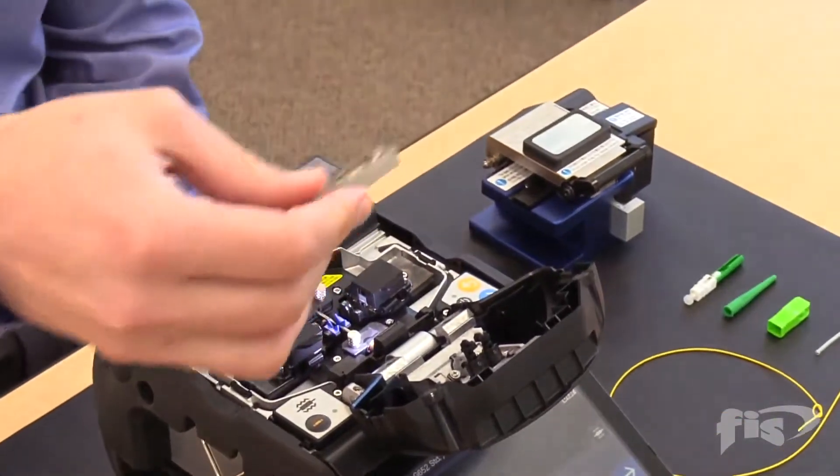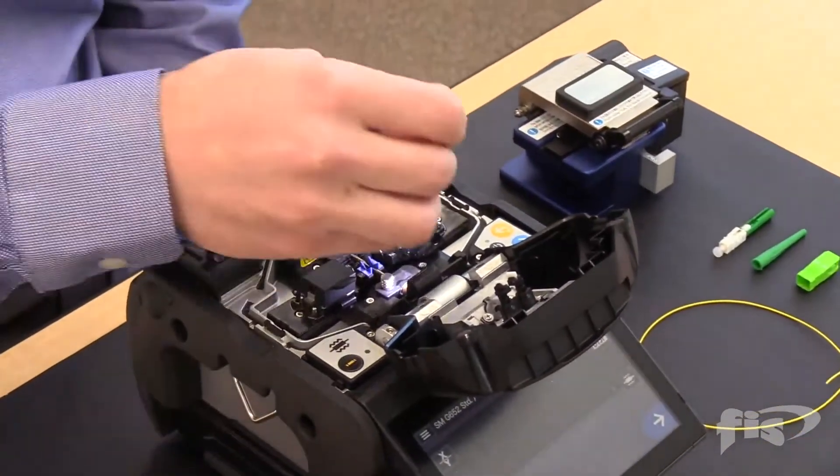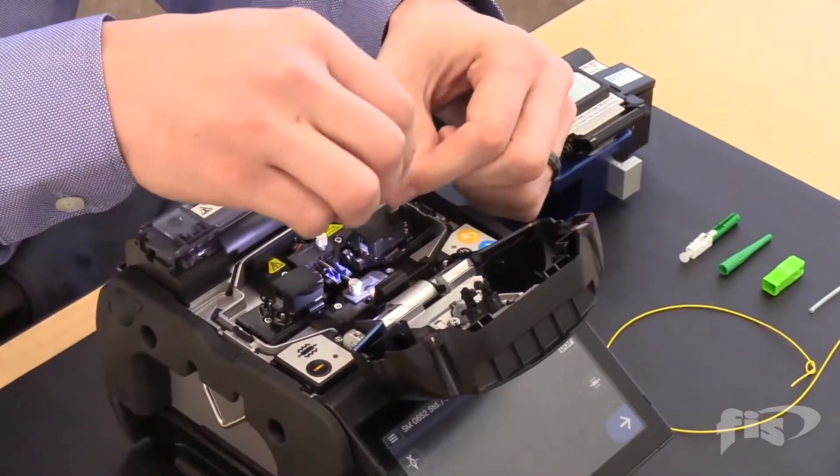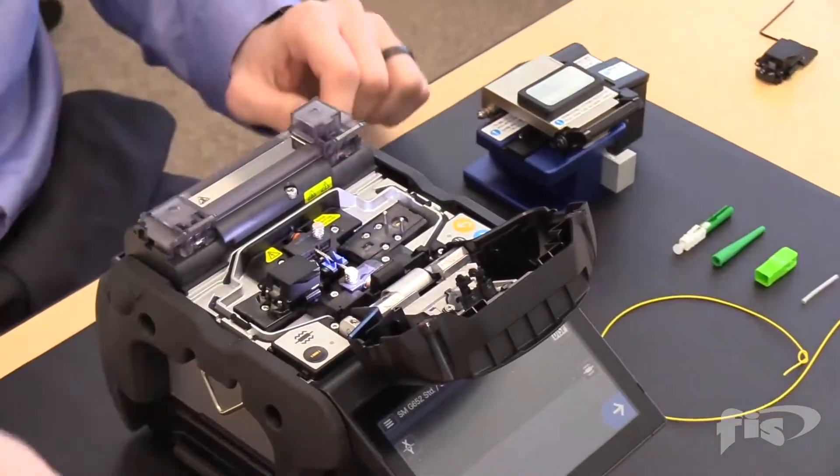To place the FIS splice-on connector holder, take an Allen wrench and unscrew the standard fiber holder from the machine and place the SOC holder onto the splicer.